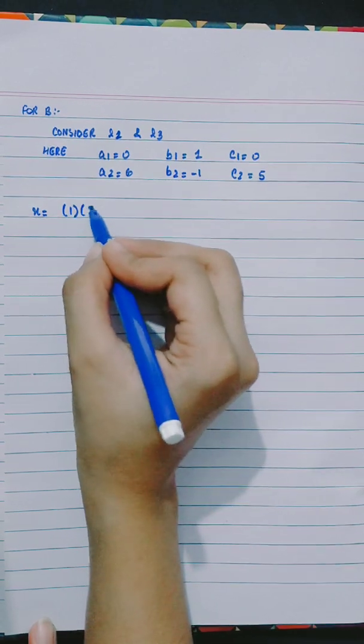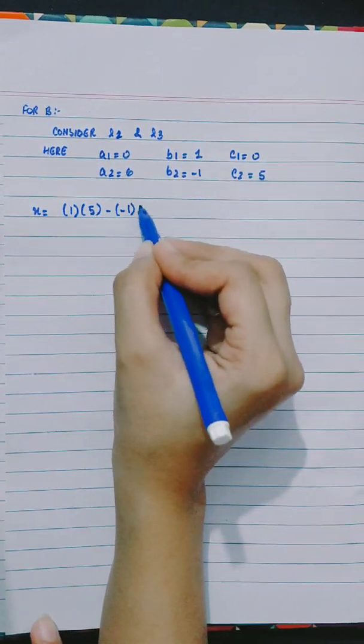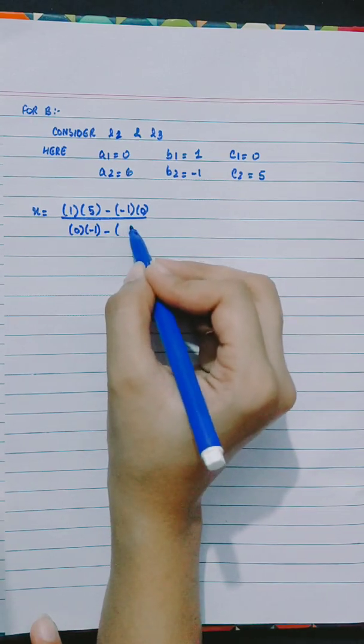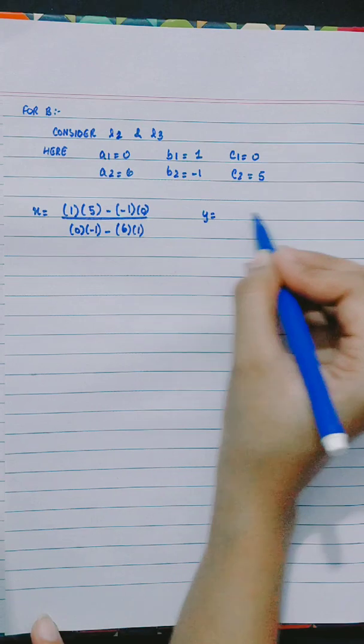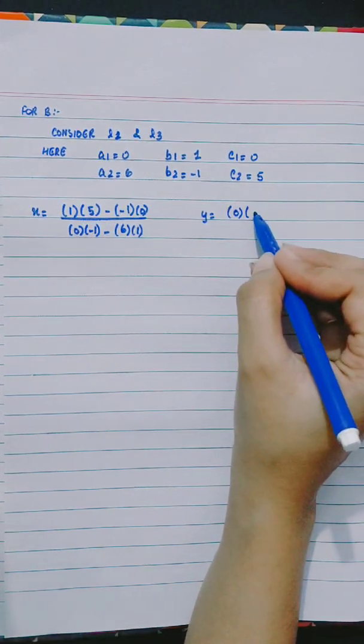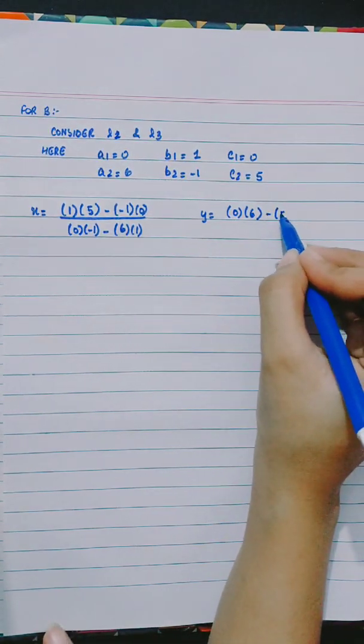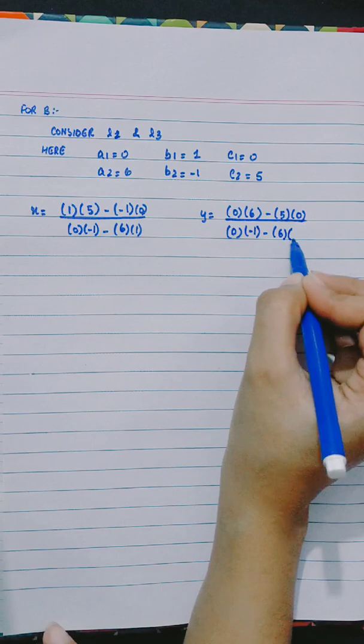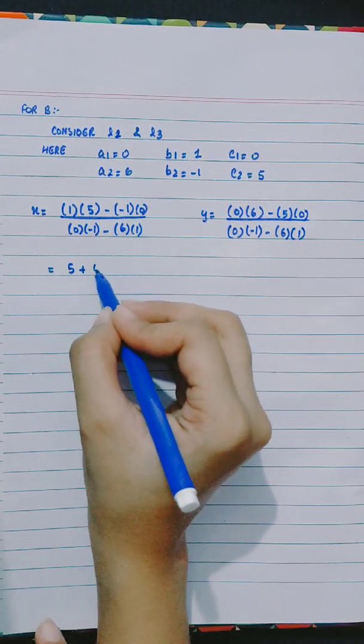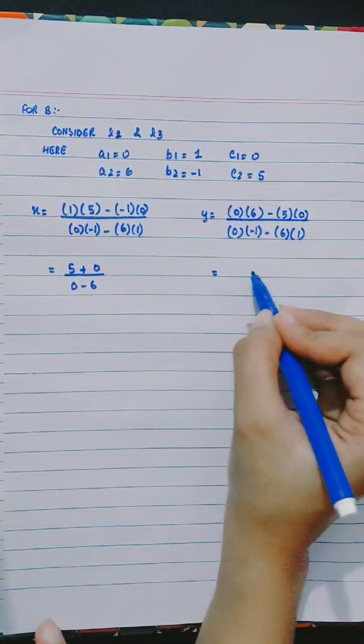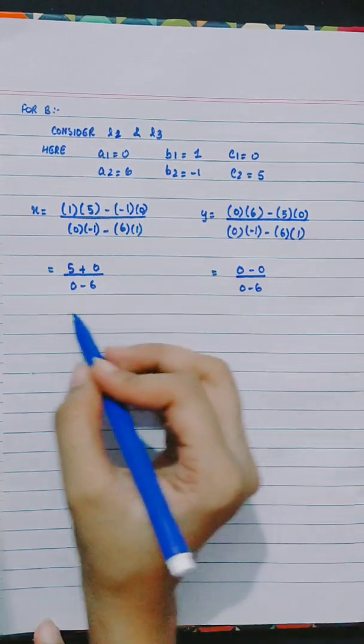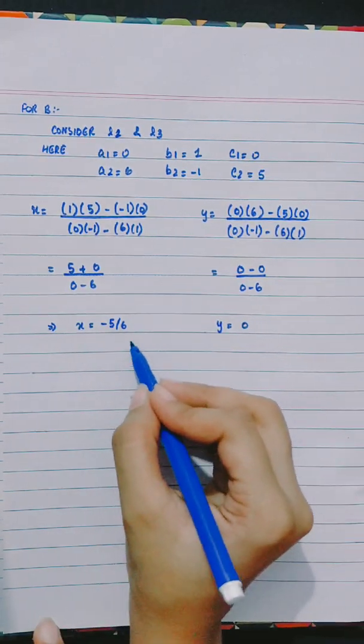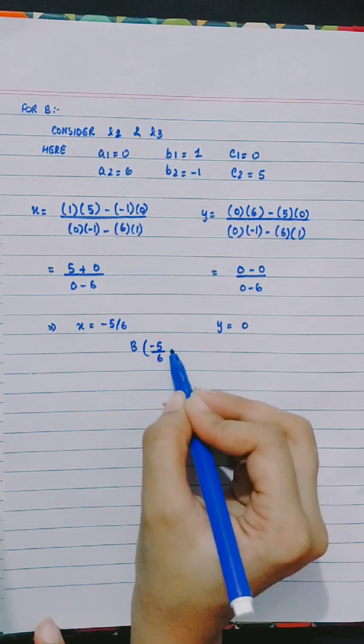x equals 1 into 5 minus minus 1 into 0 divided by 0 into minus 1 minus 6 into 1. This gives 5 plus 0 divided by 0 minus 6. x equals minus 5 by 6 and y equals 0. So B is minus 5 by 6, 0.